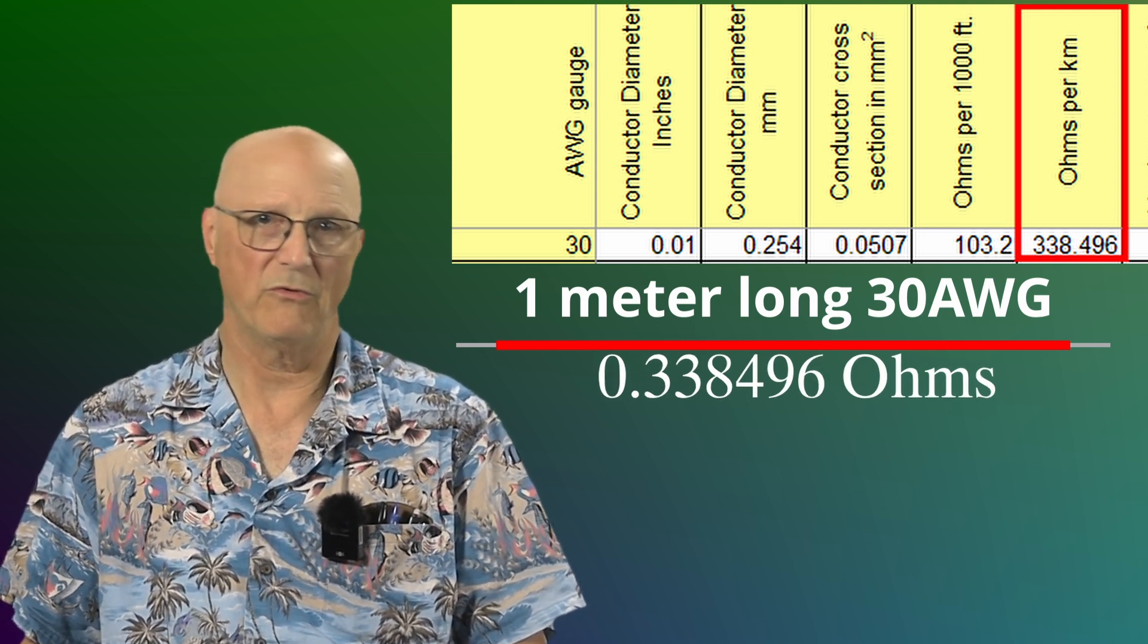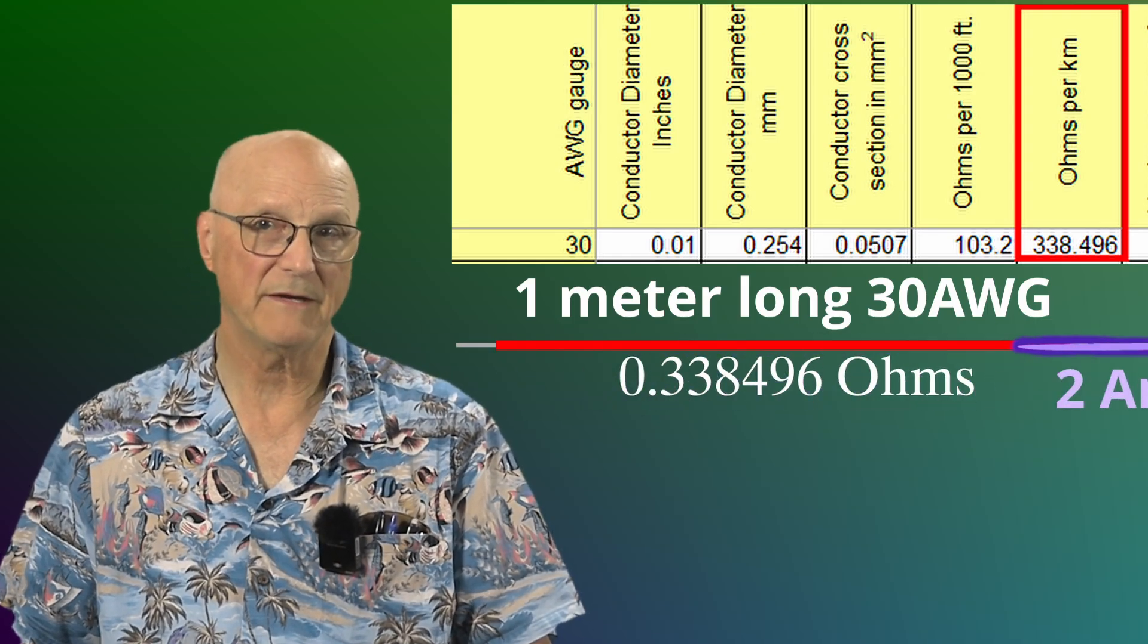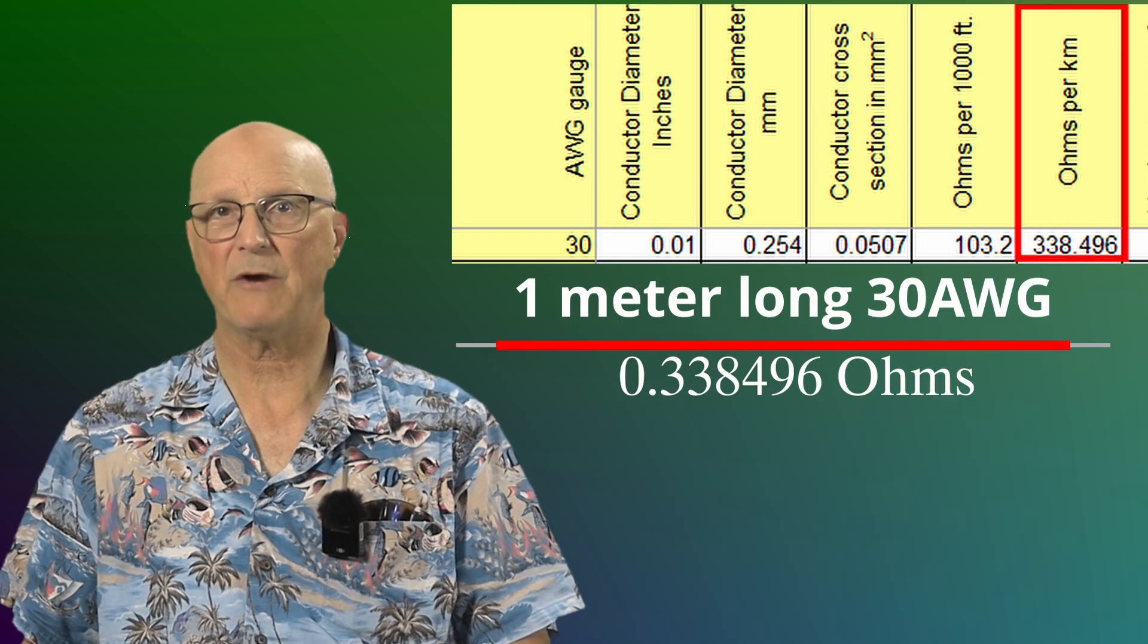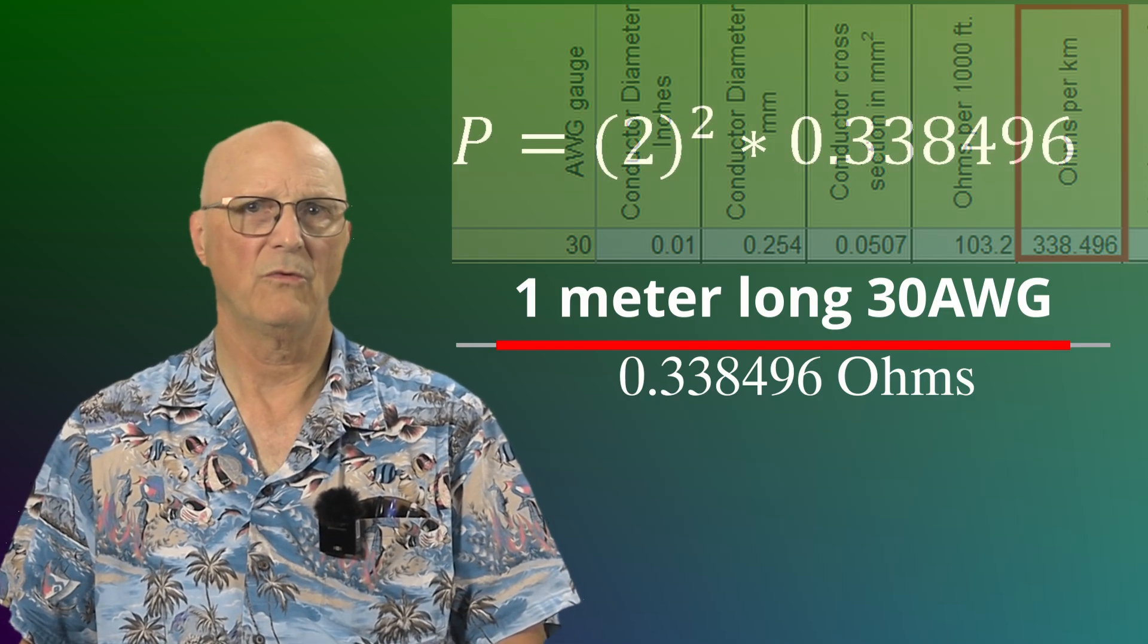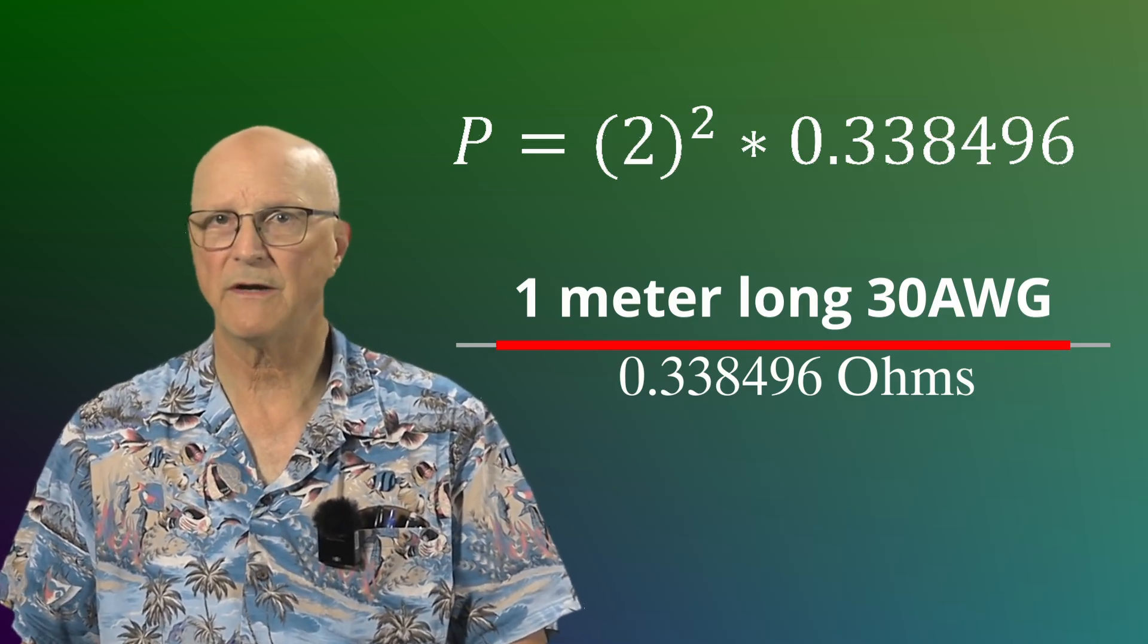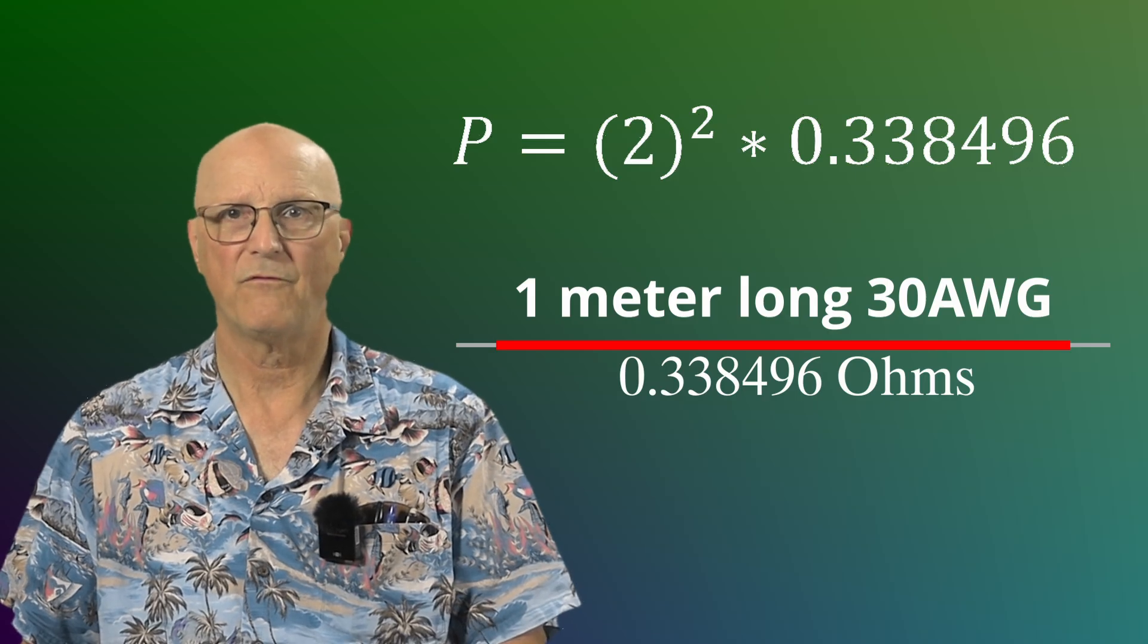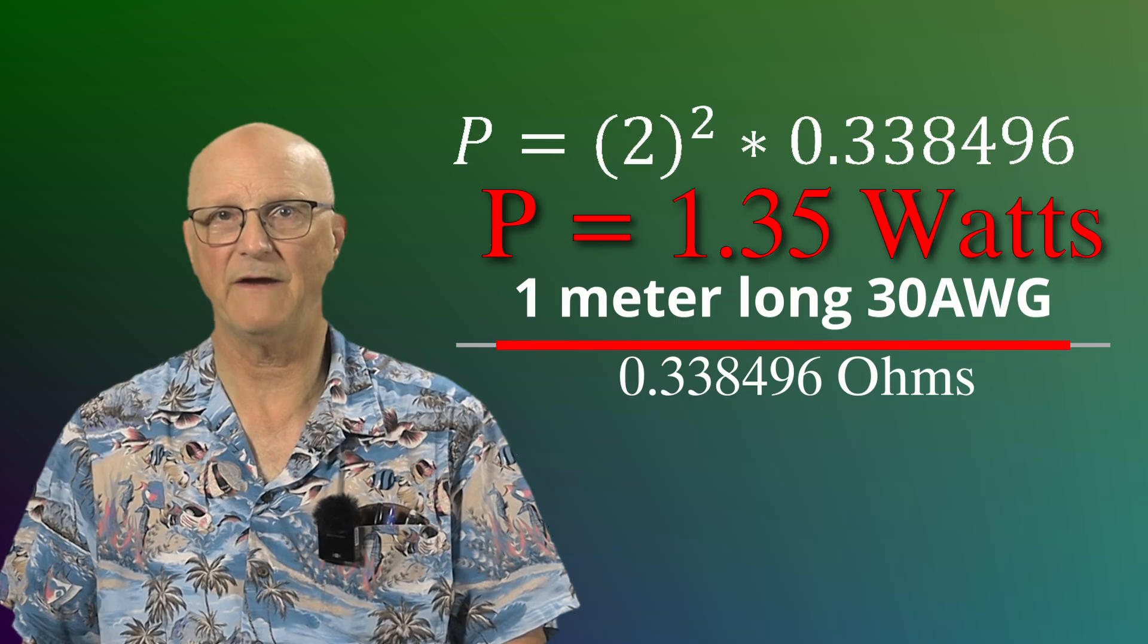So now we know the resistance of our wire and the current running through it, we can calculate the power being dissipated by it in heat in watts. We have power is equal to 2 squared times 0.338496 or about 1.35 watts.